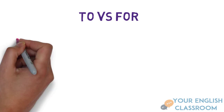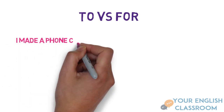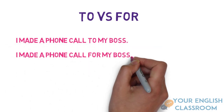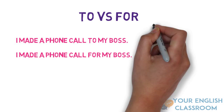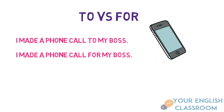Now let's look at when you find these words in similar sentences. 'I made a phone call to my boss' versus 'I made a phone call for my boss'. The first sentence means you're speaking directly to your boss. But 'I made a phone call for my boss' means you're doing it on behalf of your boss — you're speaking to somebody else, not your boss.